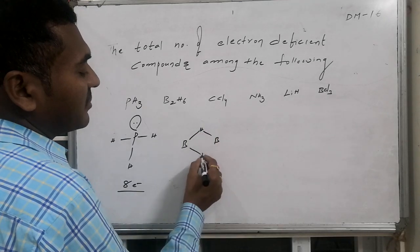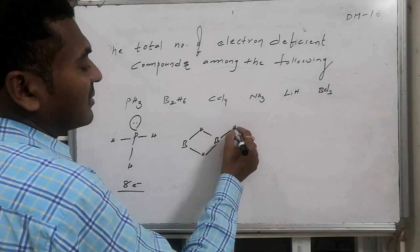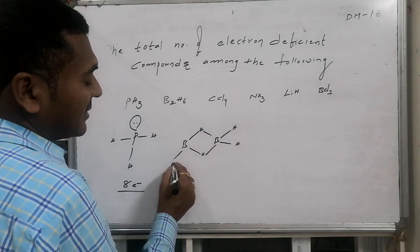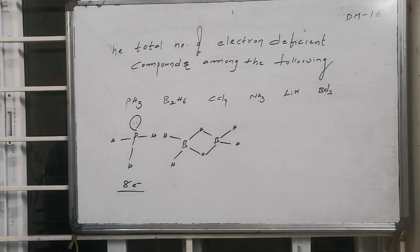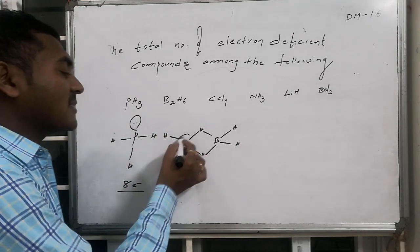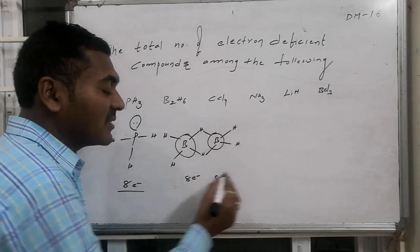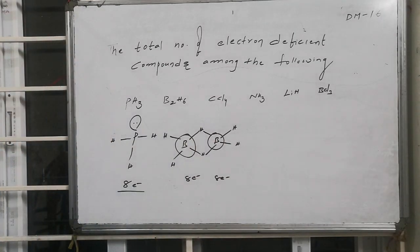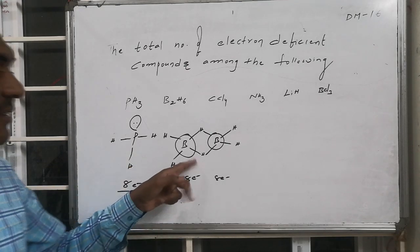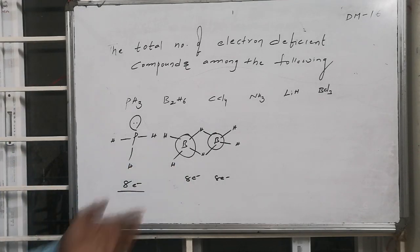This is diborane. Diborane is present in such a way that hydrogen bonds are bridged between the two boron atoms. With respect to this boron there are eight electrons, with respect to this boron this is also having eight electrons. As it is electron deficient, it is making such an arrangement.